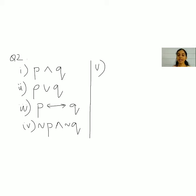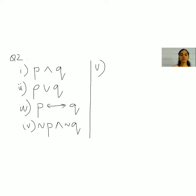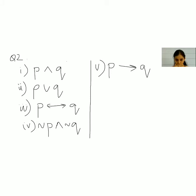The fifth one: if triangle ABC is right angled at B, then measure of angle A plus angle C is 90 degrees. 'If...then' is a single conditional. Triangle ABC right angled at B is p, the implication arrow follows, and 'measure of angle A plus C equals 90 degrees' is q.